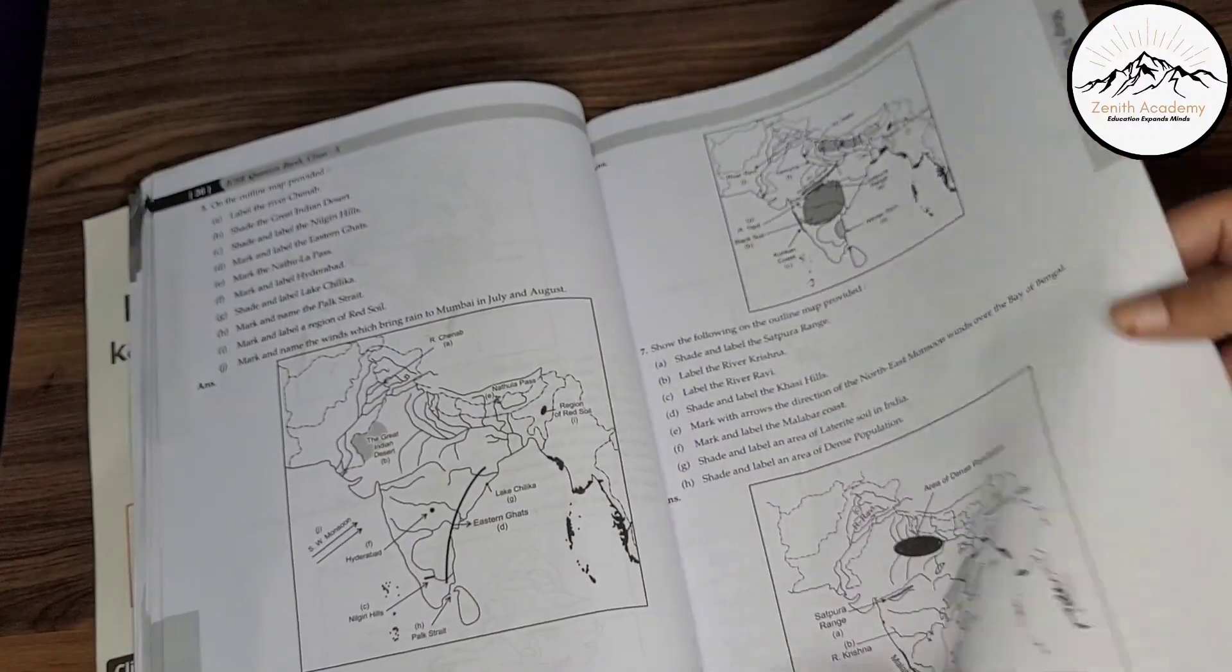Now, you see, so many questions and their answers along with the explanations are given. Now you see, set 3, map plotting A. So they have given you the question along with the answers. Very good diagrams and everything. All the maps they have covered, you need not study from anywhere else. Map plotting B, based on chapter 3, location, extent and physical features.